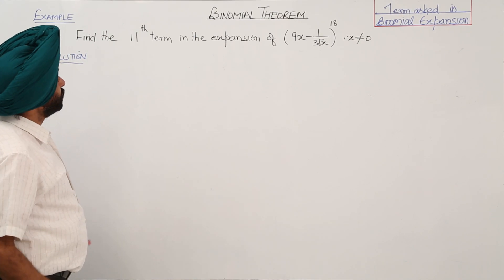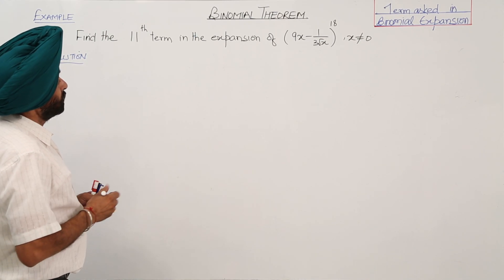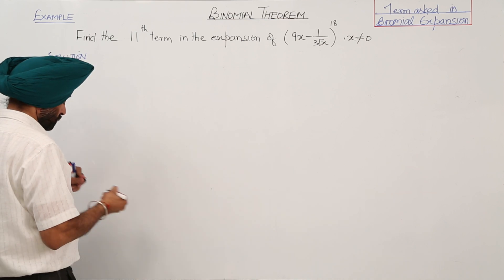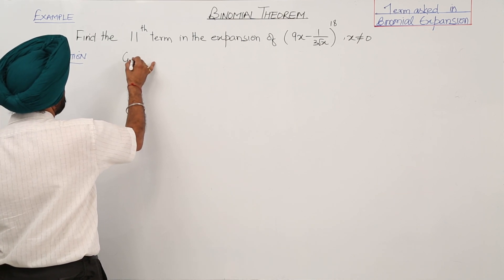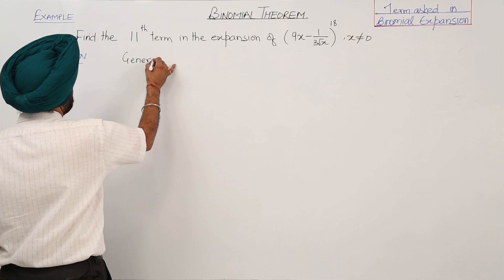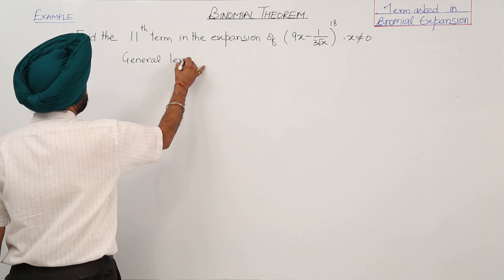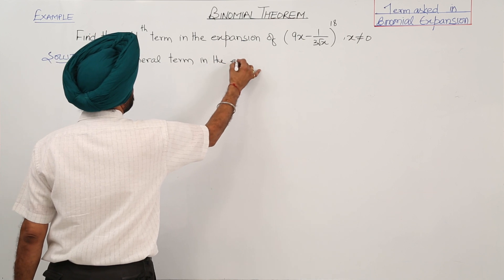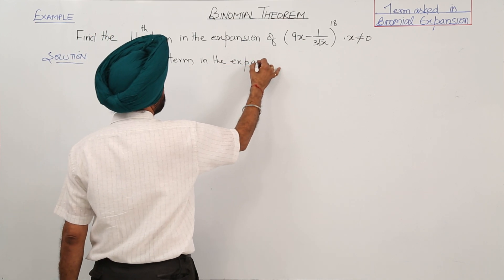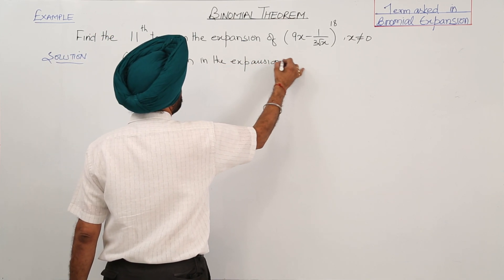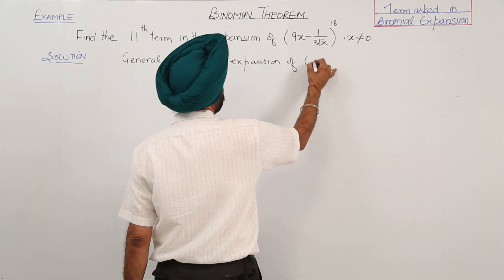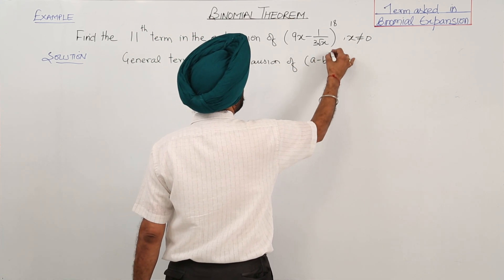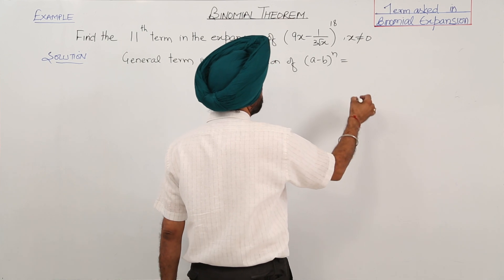Now in this question we have to find the 11th term in the expansion of the given question. The general term in the expansion of (a-b) raised to power n is...